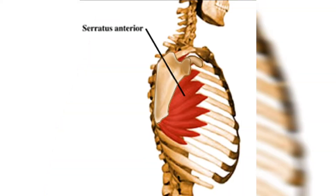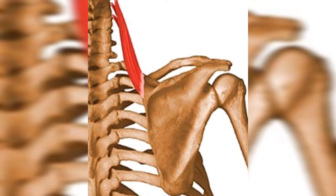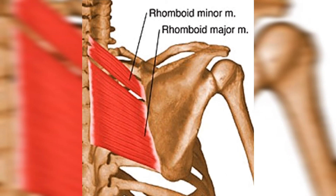Serratus anterior draws the scapula forward and upward, abducts the scapula and rotates it, and stabilizes the vertebral border of the scapula. Levator scapula elevates the scapula and tilts its glenoid cavity inferiorly by rotating the scapula. Rhomboidus minor and major retract the scapula and rotate it to depress the glenoid cavity, and fix the scapula to the thoracic wall.